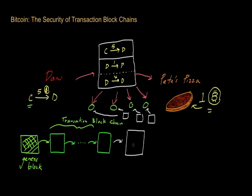Now, if you might recall from previous videos, for a Bitcoin miner to add a transaction block to a transaction blockchain, they have to solve what's known as a proof-of-work puzzle. The Bitcoin system is designed — or calibrated is a better word — so that on average, one miner will solve a puzzle in about 10 minutes.